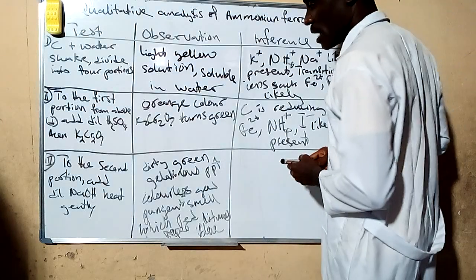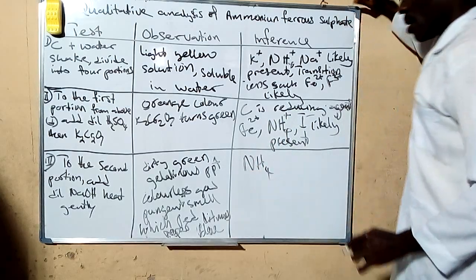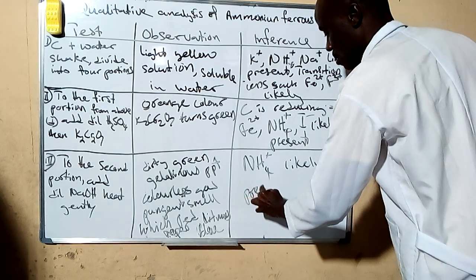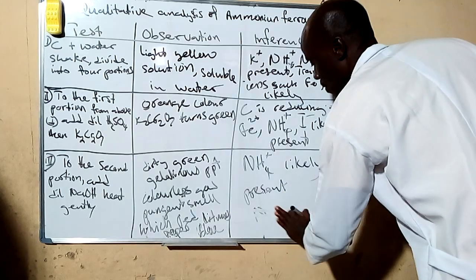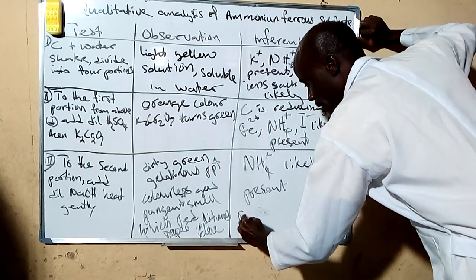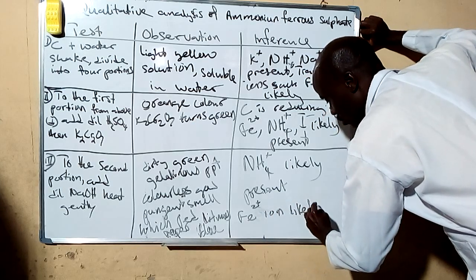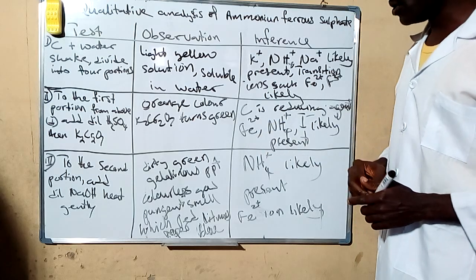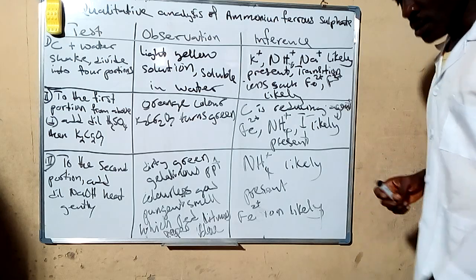The gas, the only gas that can do this is ammonia. Since it turns red litmus paper blue, it means that ammonia is likely present. And because of the dirty green color, it is likely to be a result of iron 2 ions which is likely to be present there too.